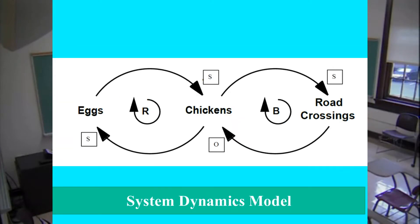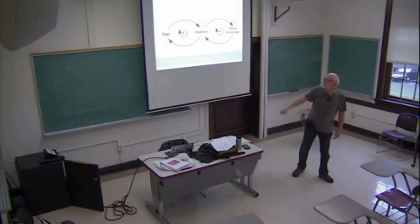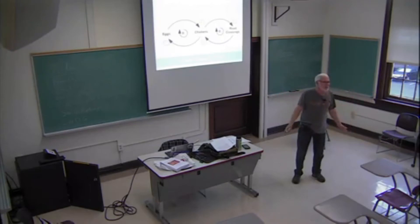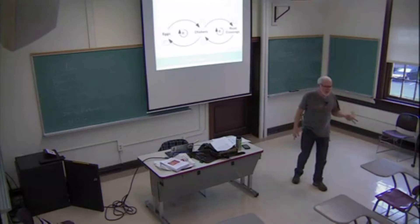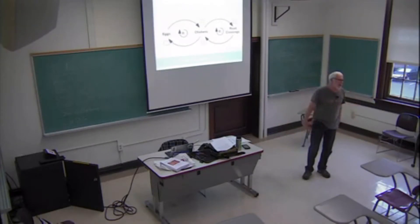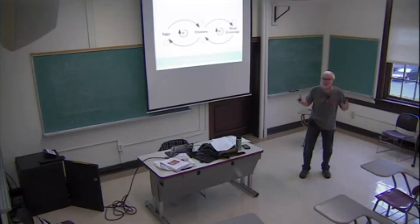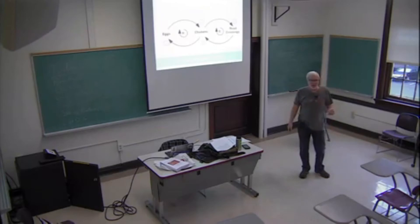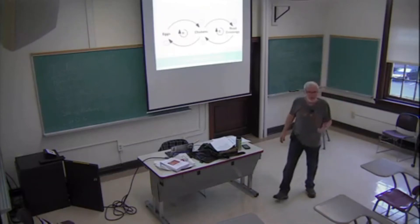When we put a reinforcing loop and a balancing loop together, we move from a causal loop diagram to a system dynamics model. As eggs go up, chickens go up; chickens go up, eggs go up — but as chickens go up, road crossings go up, and as road crossings go up, chickens go down. We have a balancing loop affecting the potential exponential growth of chickens and eggs. These two tools — a reinforcing loop and a balancing loop — are the grammatical pieces, like a noun and a verb, that make a complex system dynamics model.